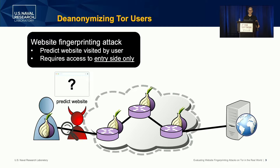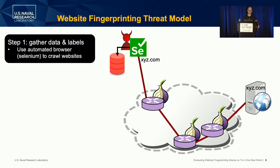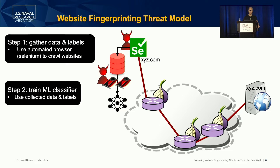In order to conduct this attack, the adversary uses machine learning but needs to have the labels to train the machine learning classifiers for website prediction. But because Tor encrypts traffic, the adversary doesn't have access to the labels directly in the network. So to get around this, the adversary must obtain these labels some way. The traditional website fingerprinting threat model says the adversary will just crawl a bunch of websites through the Tor network, building its own circuits, and then it has access to the labels because it picks which URLs to crawl. So it can create labels and data sequences, traffic patterns, put those into a database, and then train machine learning classifiers using these collected data and labels.